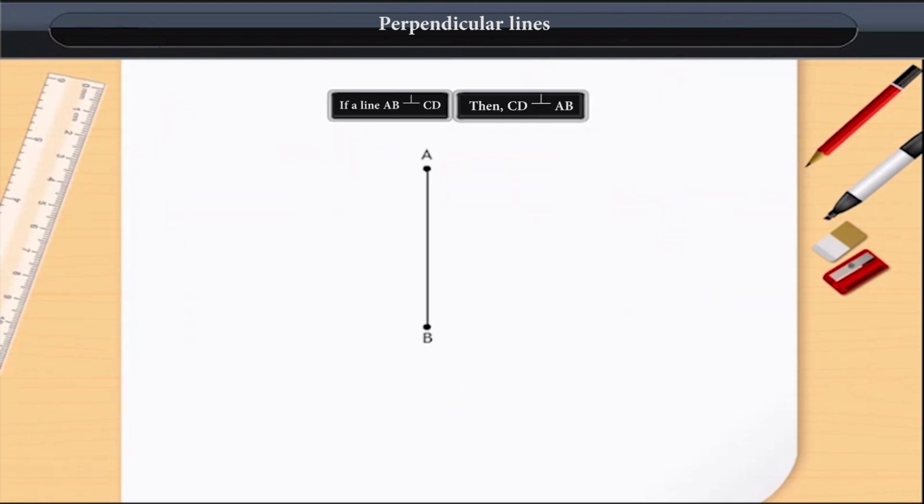Now, if a line AB is perpendicular to another line which is represented by CD, then it also means that the line CD is also perpendicular to line AB.